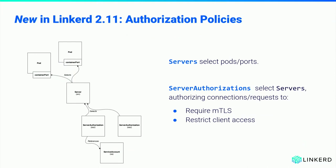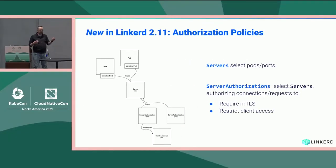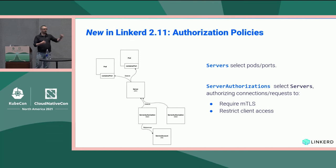Two weeks ago we released Linkerd 2.11.0 stable, which delivers a highly requested feature: authorization policies. If I have MTLS and can secure my communications, how do I assert they're secure? How do I say I only accept connections from specific clients to this application? These authorization policies do that. We have two new primitives: a Server and a ServerAuthorization. Once you have a Server, it assumes a default deny policy, and then you can add authorizations onto that. Servers select pods and refer to ports on those pods using familiar label selector primitives. Authorizations then select servers.